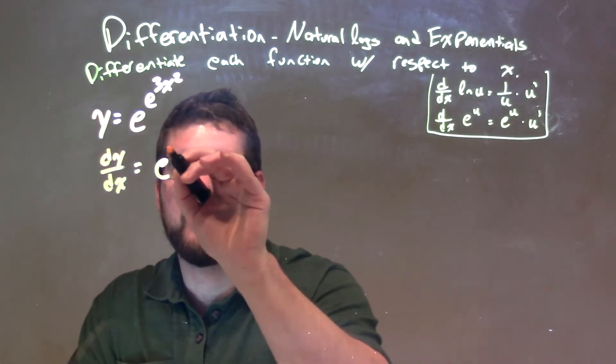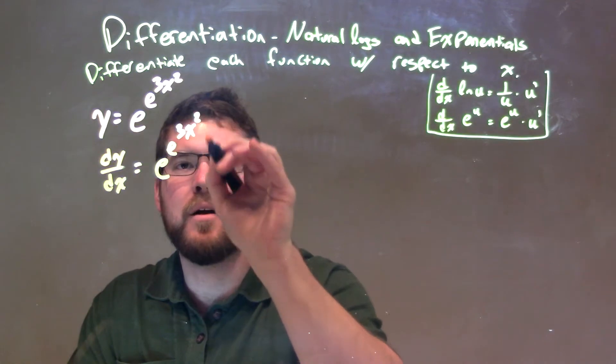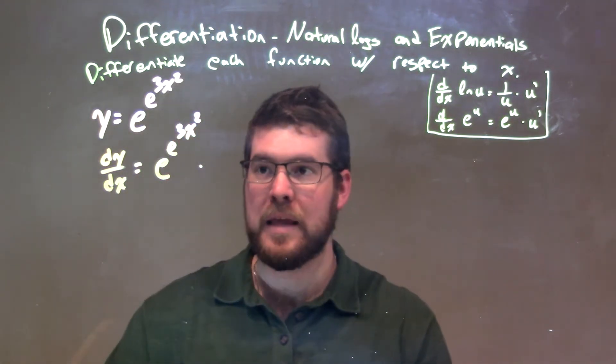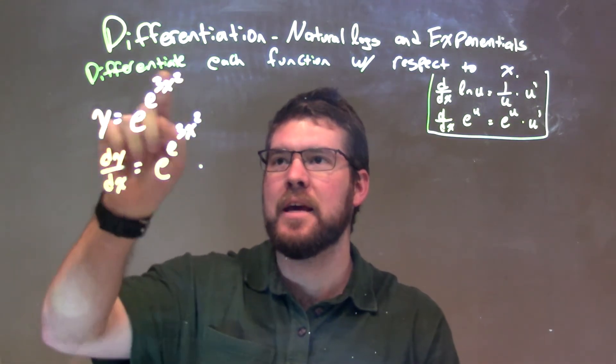So let's repeat what's written: e to the e to the 3x squared times the derivative of the exponent. Well, our exponent is e to the 3x squared.